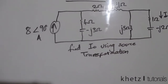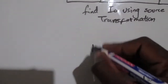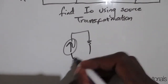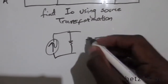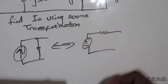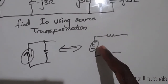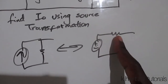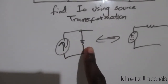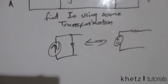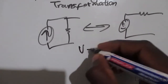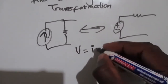Source transformation — just to recap — says if you have a current source in parallel with a resistor, you can transform it into a voltage source in series with that same resistor value. Or if you have a voltage source in series with a resistor, you can transform it into a current source in parallel with that same resistor value. We'll use Ohm's law, which says V equals IR.